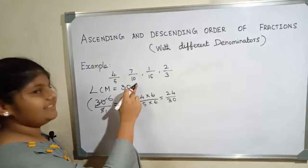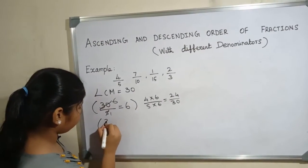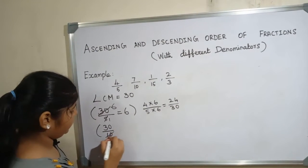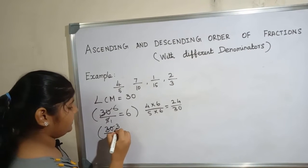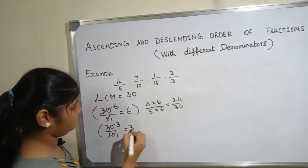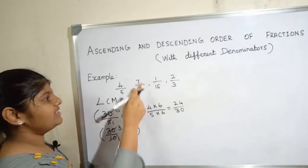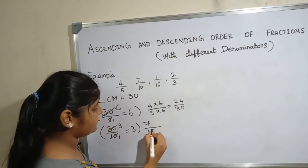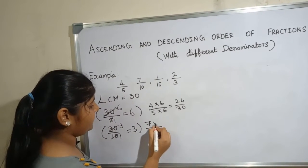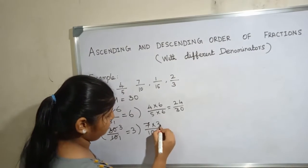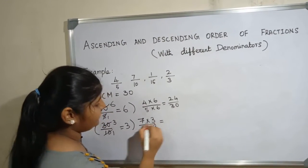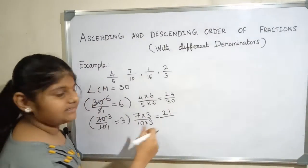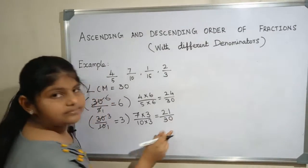The next denominator is 10. 10 3s are 30. 30 by 10. 10 1s are 10, 10 3s are 30. We will take the next fraction 7 by 10, 7 by 10. Multiply with 3. 7 3s are 21, 10 3s are 30.